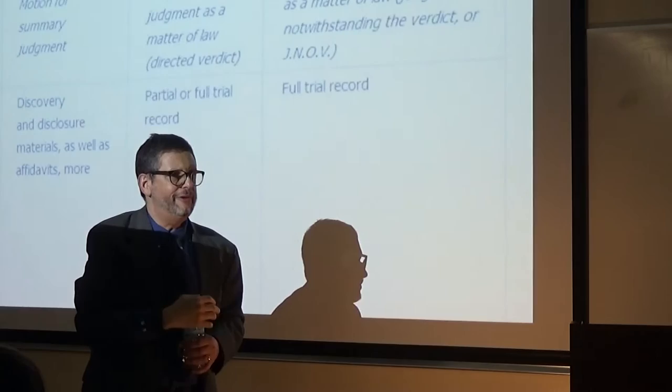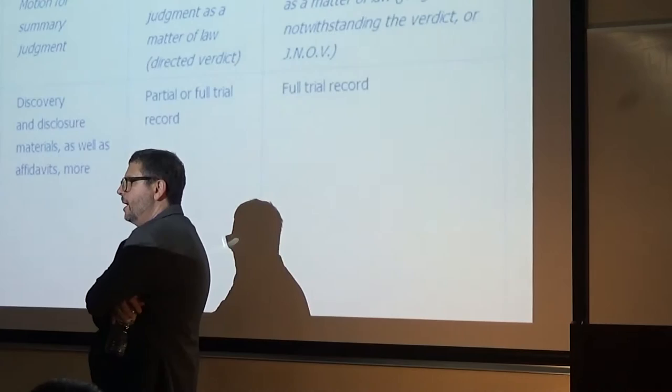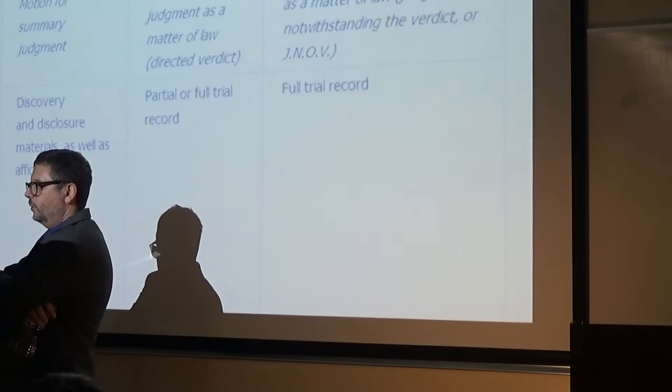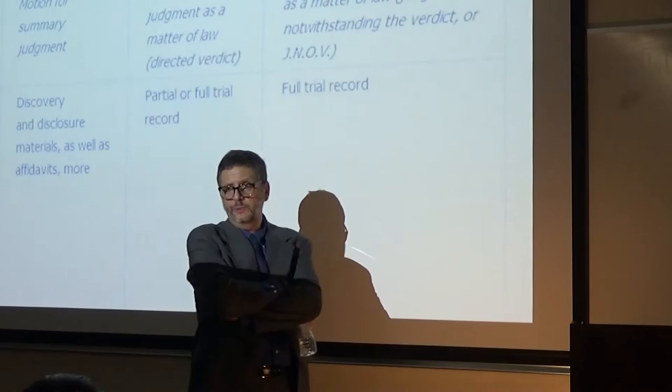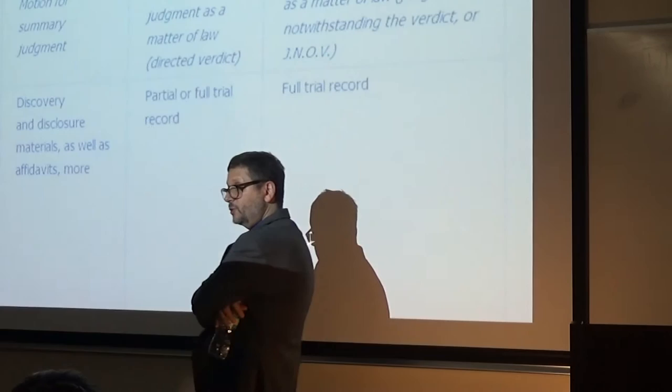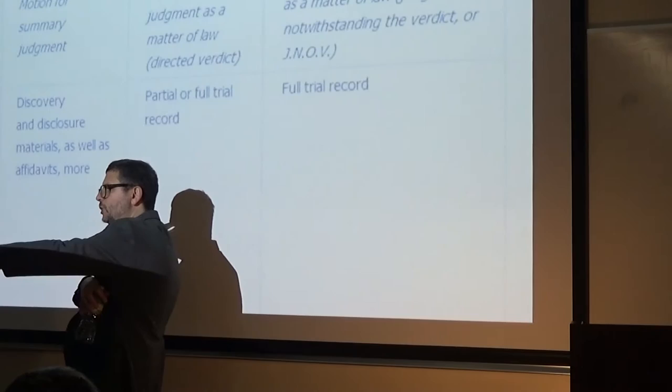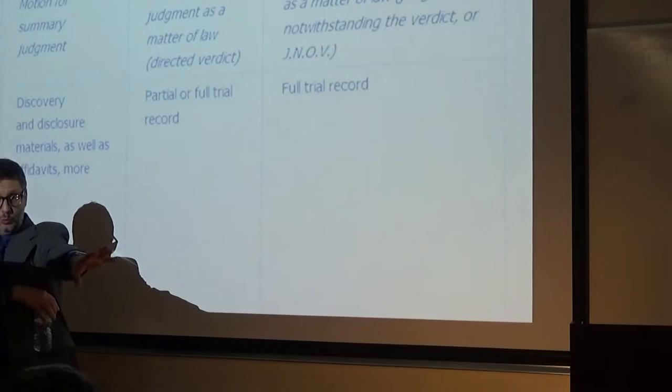Whether you're moving under 50A or 50B, it's the same standard. The court is asking as a matter of law: must reasonable jurors find in favor of the moving party? That's a question of law — the court is not supposed to engage in credibility determinations or weigh evidence. Instead it's asking must reasonable jurors find in favor of the moving party. Let's contrast all of this with a motion for new trial under Rule 59.